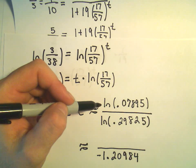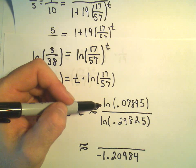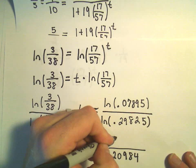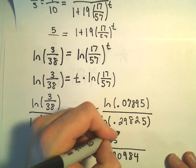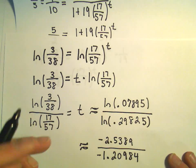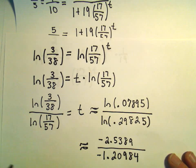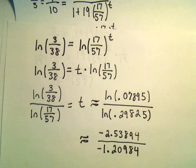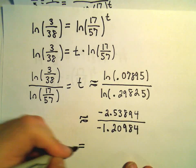And let's see, the number on top, 0.07895. If we do the natural logarithm of that, I'm getting negative 2.5389. One more. It looks like a 4.